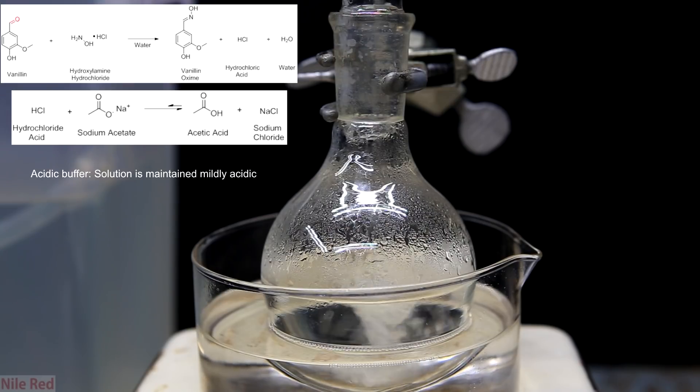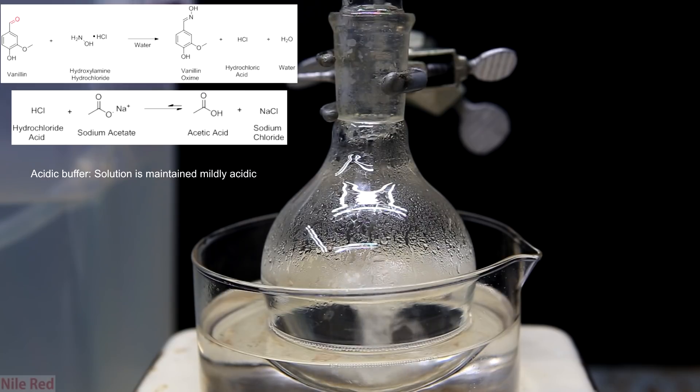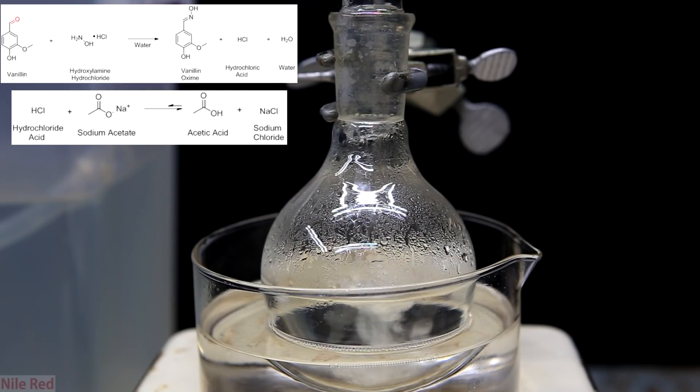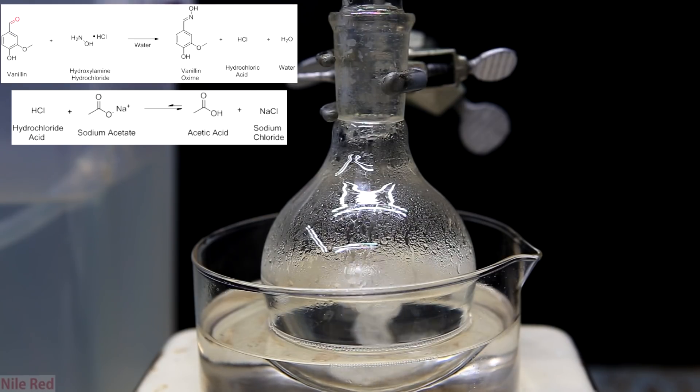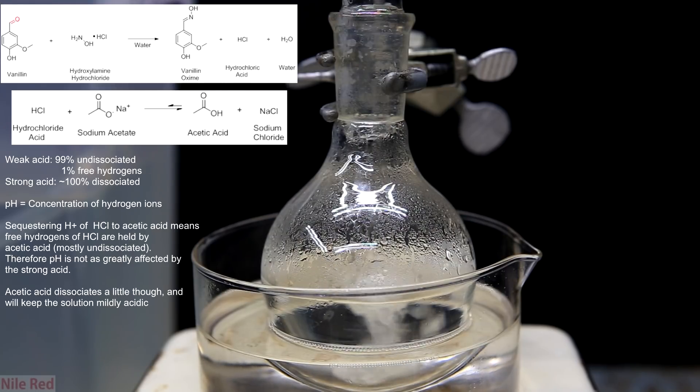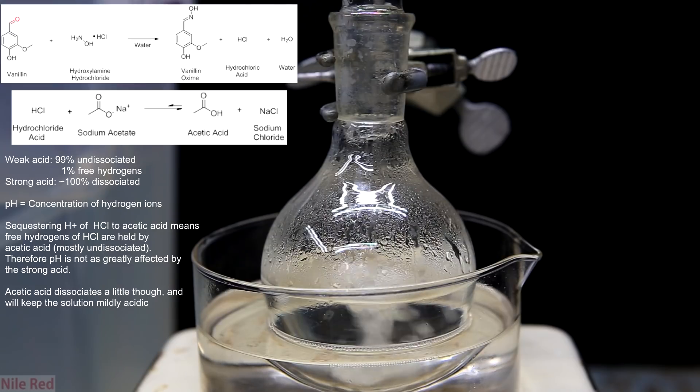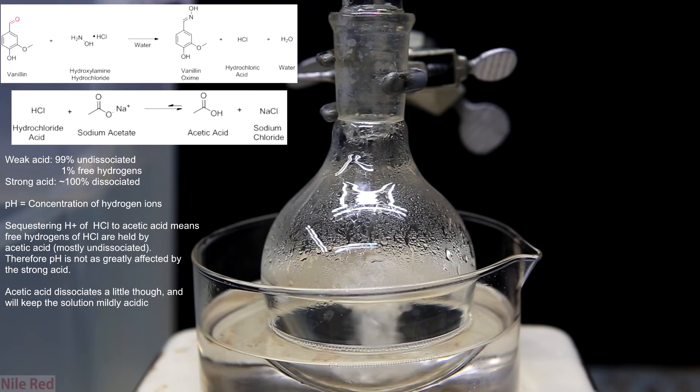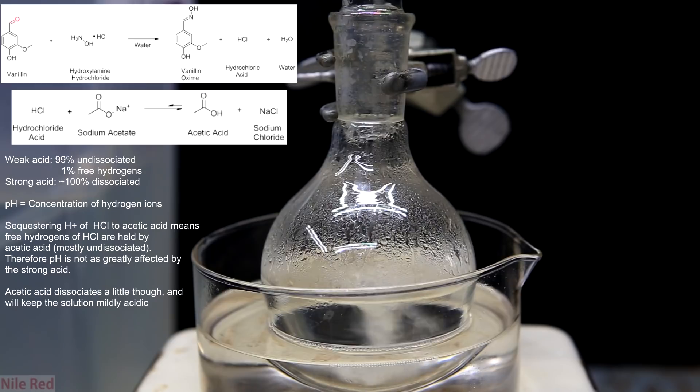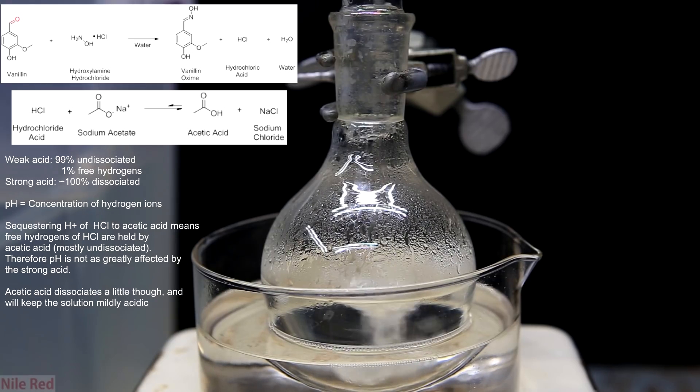I won't really go into the details on exactly how a buffer solution works but it basically resists pH change. In the case of sodium acetate it will react with free hydrogen ions from the hydrochloric acid and it will sequester it into acetic acid. Acetic acid is a weak acid and it likes to hold on to its hydrogens so it pretty much just picks up the extra hydrogens that form, sequesters it into acetic acid and prevents the pH from decreasing. This way the pH remains more or less fixed during the reaction and we don't have strong hydrochloric acid floating around.